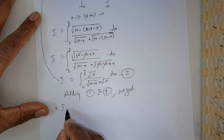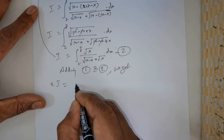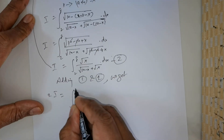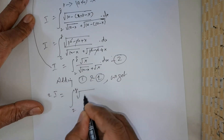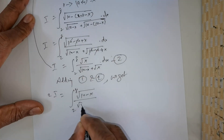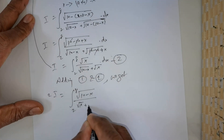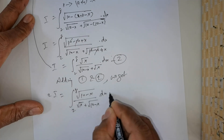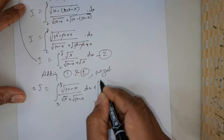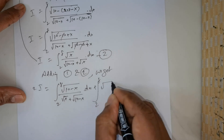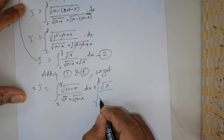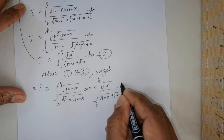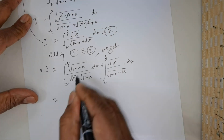So, 2I is equal to the integral from 2 to 8 of √(10 - x) divided by [√x + √(10 - x)] dx, plus the integral from 2 to 8 of √x divided by [√(10 - x) + √x] dx.